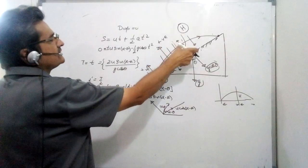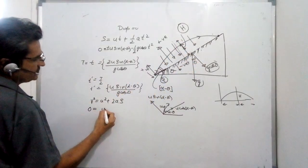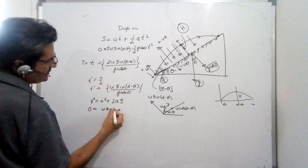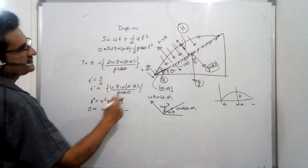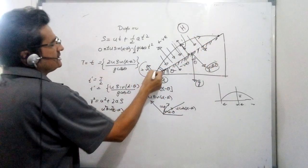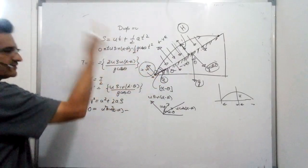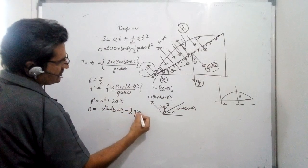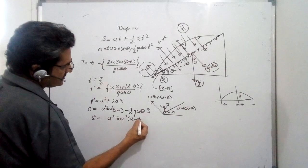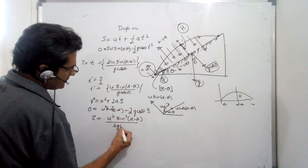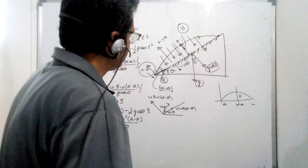Using v² = u² + 2as with final velocity v = 0, initial velocity U sin(alpha minus theta), and acceleration negative G cos theta, we get: 0 = U² sin²(alpha minus theta) - 2G cos theta × H. Solving, the maximum height is H = U² sin²(alpha minus theta) / (2G cos theta).